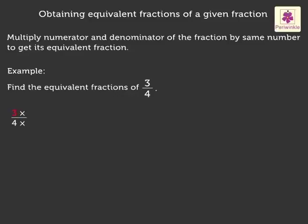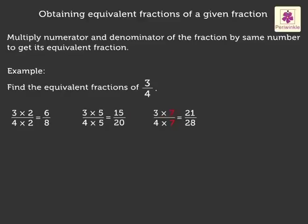Let us multiply the numerator and the denominator of the fraction with the number two. We get three into two upon four into two, which is equal to six upon eight. Next, let us multiply with number five. We get three into five upon four into five, which is equal to fifteen upon twenty. Multiplying with number seven, we get three into seven upon four into seven, which is equal to twenty-one upon twenty-eight.